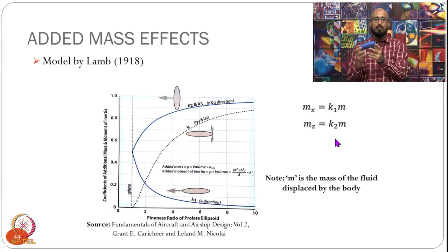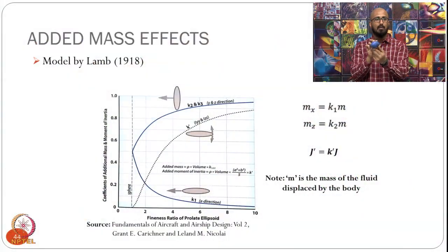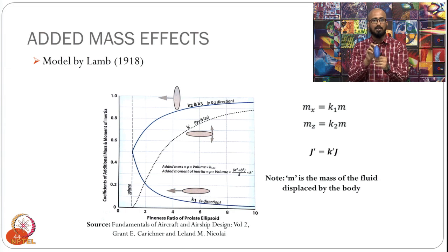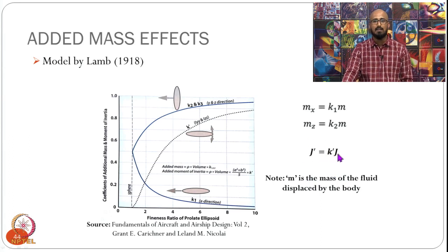So we have two different added mass coefficients with different values about the x-axis and y/z-axis, with my equal to mz. There is also an added inertia term when the airship is turning — yawing or pitching. Both of these would be equal. It is not just about masses; it is also about inertia, because when you are turning you are also displacing fluid mass. So in yawing and pitching motion we have an added inertia to the system.